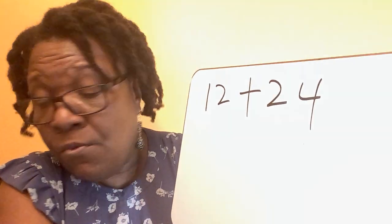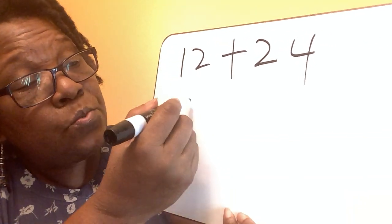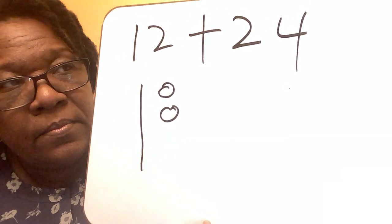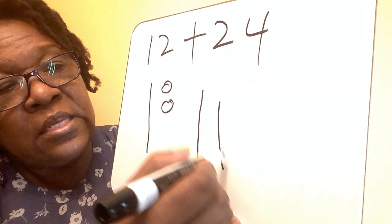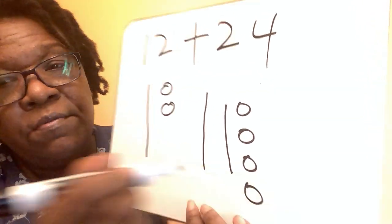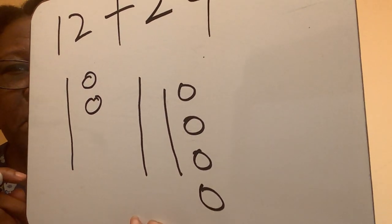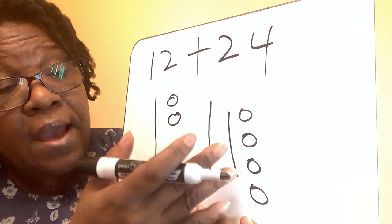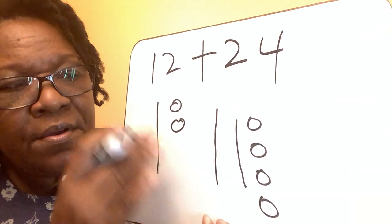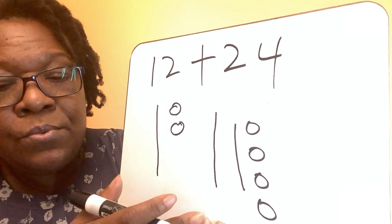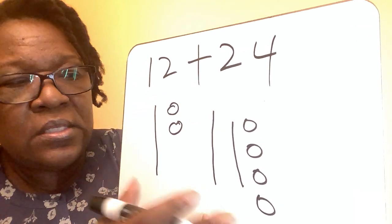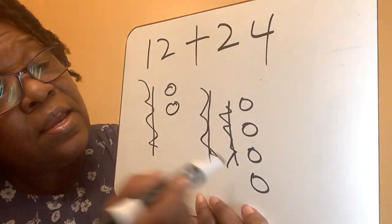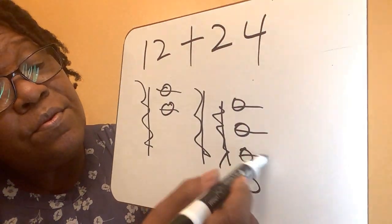Now I'm going to draw it for you. This will be 10 — remember this represents 10 — 11, 12. And here you go: 10, 20, 21, 22, 23, 24. As your child gets comfortable counting, it's good to have them bring the tens together. So here we go: 10, 20, 30, 31, 32, 33, 34, 35, 36.